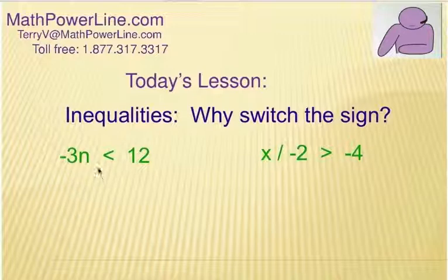Now, look at the first example. Negative 3n is less than 12. All right, the question is, do we have to switch less than and make it greater than? Well, in this case, we do because we're going to be dividing each side by a negative 3 because we want n by itself, right?